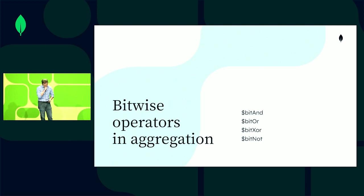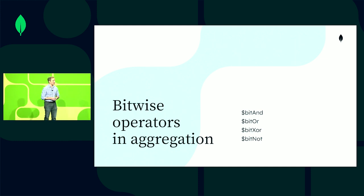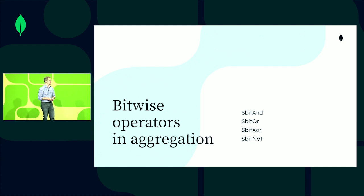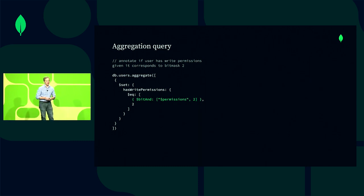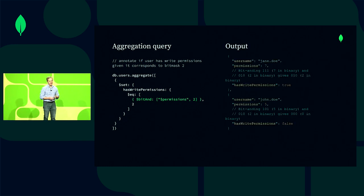We're also making it easier to work with bitwise operators. If you love packing a lot of data into your fields using bitmasks, these are the features for you. When you have a field representing multiple data points — whether it's permissions, settings, or status — you can now use $bitAnd, $bitOr, $bitXor, or $bitNot to make smart decisions in your aggregations. For example, using $bitAnd on a field called $permissions, you can extract whether a permissions value contains a specific bit — like write access — annotating that Jane Doe has write access while John Doe does not.